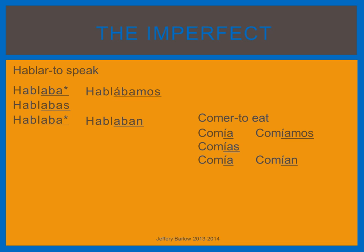Again, we have the same yo form and él, ella, usted form, so using yo is a good idea so that you are clear. Each one of these endings has an accent mark on the I because of the strong and weak vowel combination — the I being the weak vowel — which needs the accent mark for correct pronunciation.